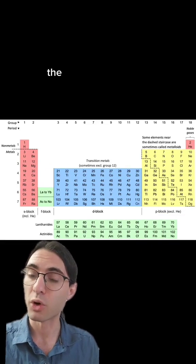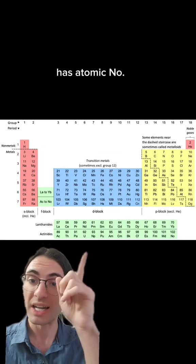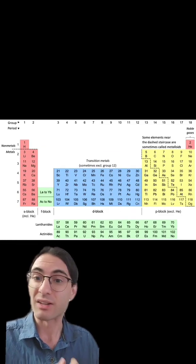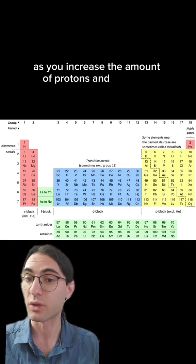And generally speaking, the heavier the element, the more unstable it is. That's why the heaviest element that occurs naturally has atomic number 92, it's uranium, and all of the heavier elements get more and more radioactive, more and more unstable, as you increase the amount of protons and neutrons.